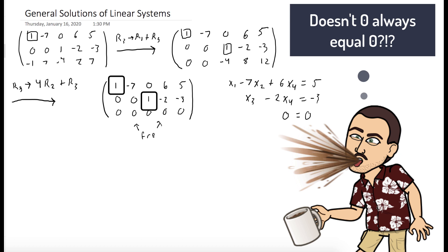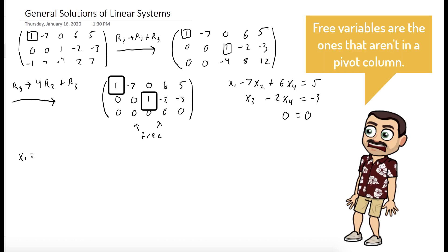Column two and column four will be our free variables. So if we solve for x1, we get 5 plus 7x2 minus 6x4.